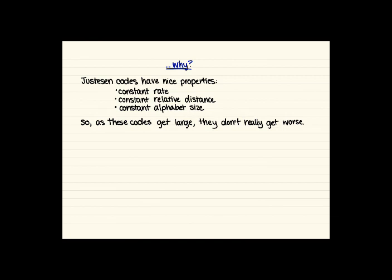So now the reason that we go through this more complicated construction is that it turns out that these Justesen codes have some nice properties, which is that the rate is constant, the relative distance is constant, and the alphabet size is constant. So basically as these codes get large, they don't really get worse. They sort of maintain these properties that we want for them, which isn't true for Reed-Solomon codes, for example. So this is why doing this construction is beneficial and creates a code with some nice properties that are retained as it gets larger.